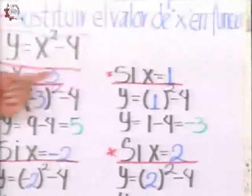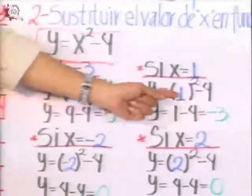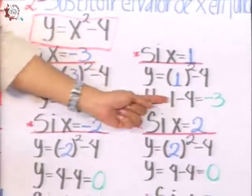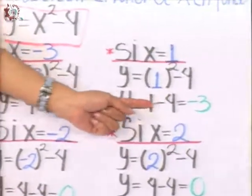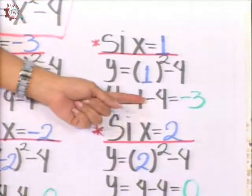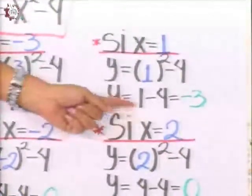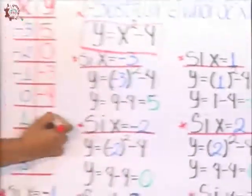For 1, if x is 1, again I substitute that value in this function. Y is equal to 1 al cuadrado minus 4. 1 times 1 equals 1, minus 4. Again, different signs, here I have positive, negative, they subtract, and I get minus 3. The minus sign will predominate because 4 is greater than 1. So I have minus 3 as result.